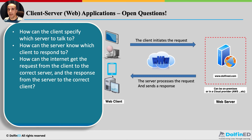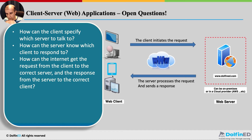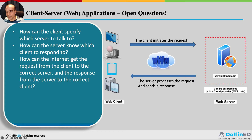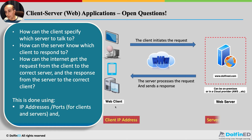IP addresses are your address on the internet. Exactly like a mailing address — if you have a mailing address and I have one, we can send letters to each other. On email, you have an email address and I have one; you write to me and I respond back. Two things are needed: your machine must have an IP address on the internet, and the server must also have an IP address, and they must be reachable — accessible from the internet.